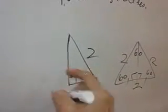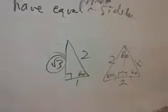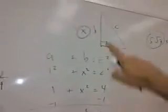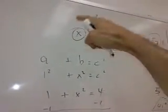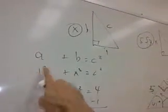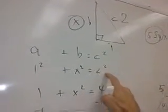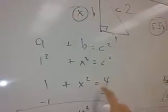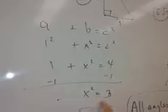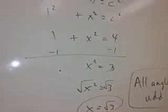Now, using Pythagoras, we can find out that this is root 3. We found that out because a squared plus b squared equals c squared. So it's going to be 1 squared plus x squared equals 2 squared. Now we've got x squared equals 3. So you do the root of each one, you get x equals root 3.